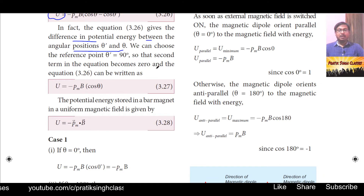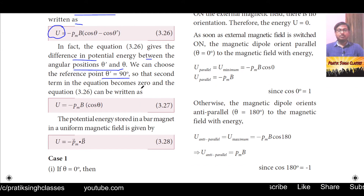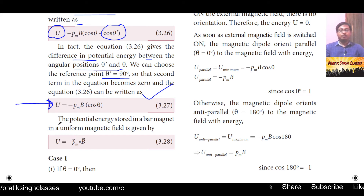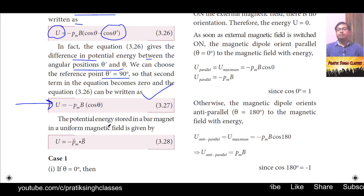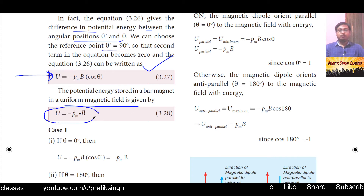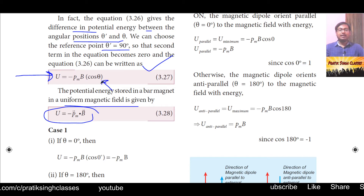If we set the initial angle θ' = 90°, then cos 90° = 0, so the second term vanishes. The equation simplifies to: U = −p_m · B · cos θ. This is equation 3.27, which can also be written in vector form as U = −(vector p_m) · (vector B), a dot product. Since it involves cos θ, potential energy is a scalar quantity — it has only magnitude and no direction.